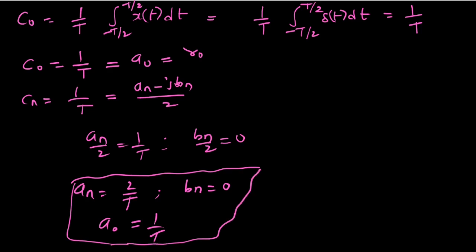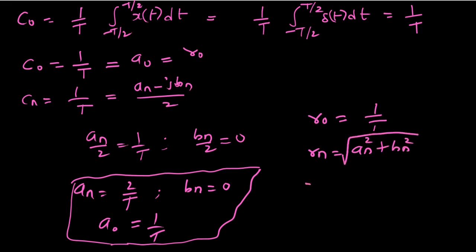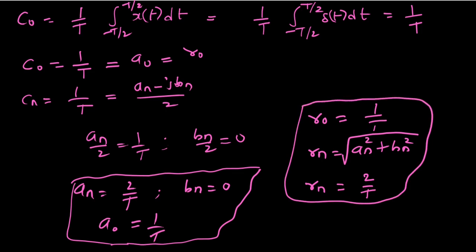These are the real Fourier series coefficients. Now Rn equals the square root of an squared plus bn squared. Since an equals 2/T and bn equals 0, Rn equals 2/T. The phase phi_n equals tan inverse of bn over an, which is tan inverse of 0, giving phi_n equals 0 degrees.